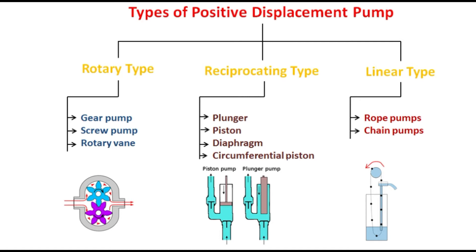A positive displacement pump can be further classified according to the mechanism used to move the fluid: 1. Rotary type positive displacement. 2. Reciprocating type positive displacement. 3. Linear type positive displacement.